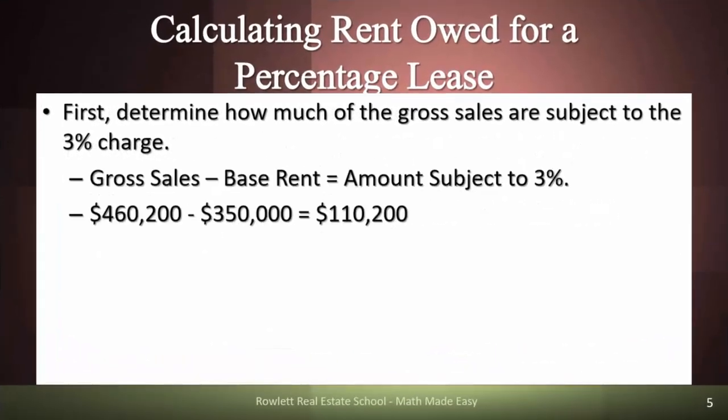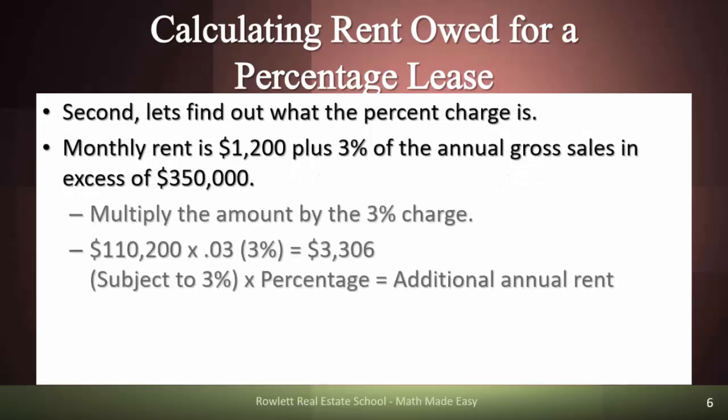The first thing we need to do is determine how much of the gross sales are subject to the 3% charge. The contract specifies anything over $350,000, and we did $460,200 worth of sales. So we subtract those to get $110,200 as our difference. That will be the number we multiply by 3%, or 0.03 once you convert the percentage to a decimal.